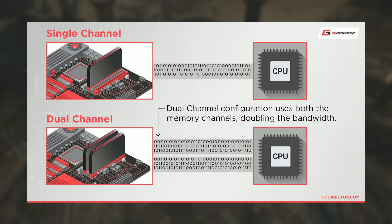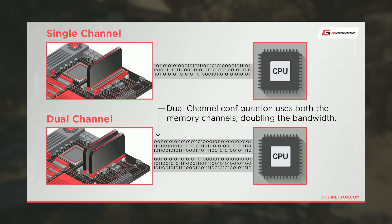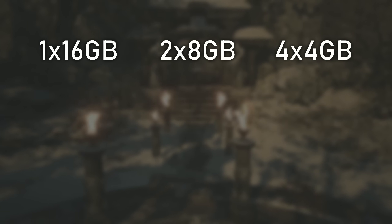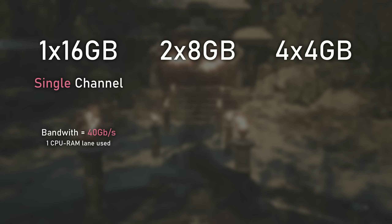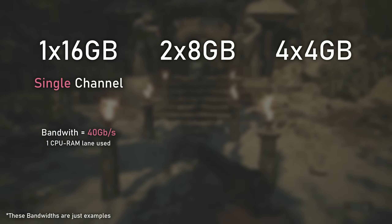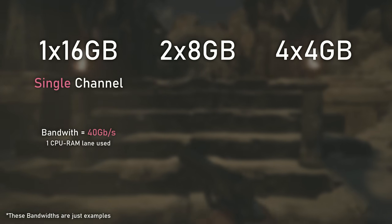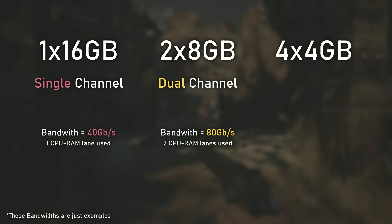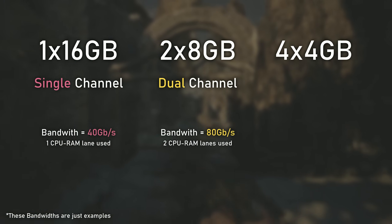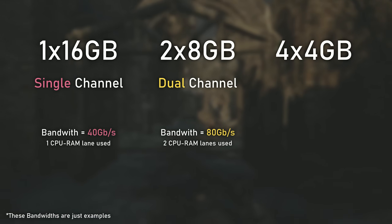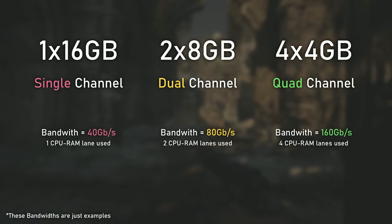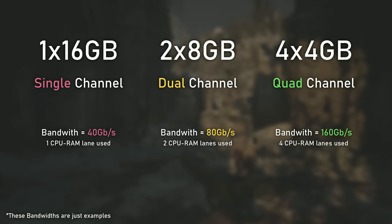The more RAM channels you have, the better the performance should be — but how does it work? Most likely not exactly as you think. Technically, when you are using only one RAM stick you will be limited to single channel, which means you'll have half the bandwidth you would have with two RAM sticks in dual channel, and one fourth of the bandwidth you would have with four RAM sticks in quad channel.